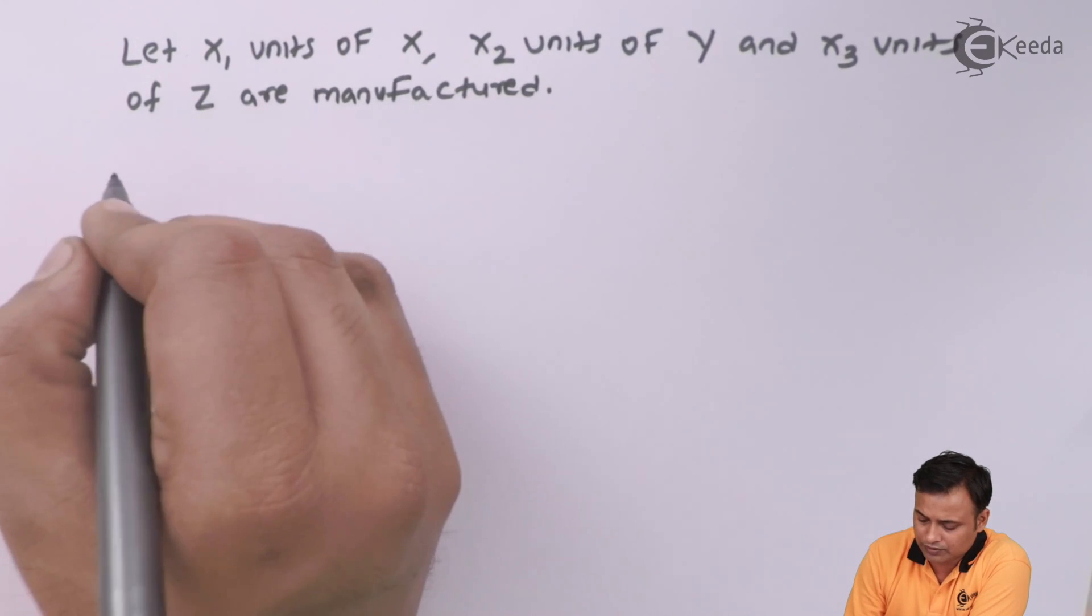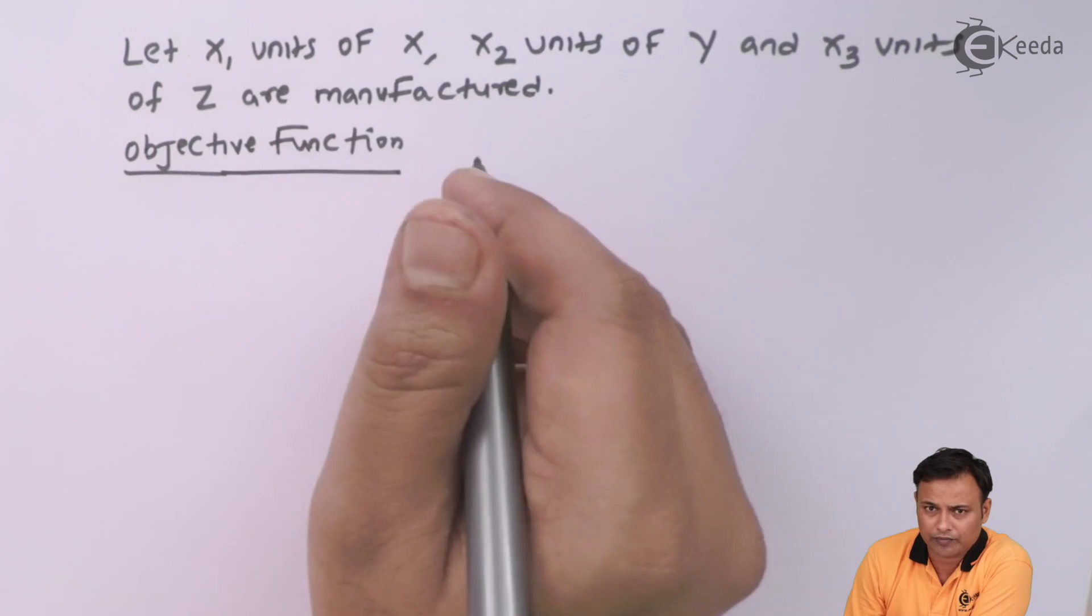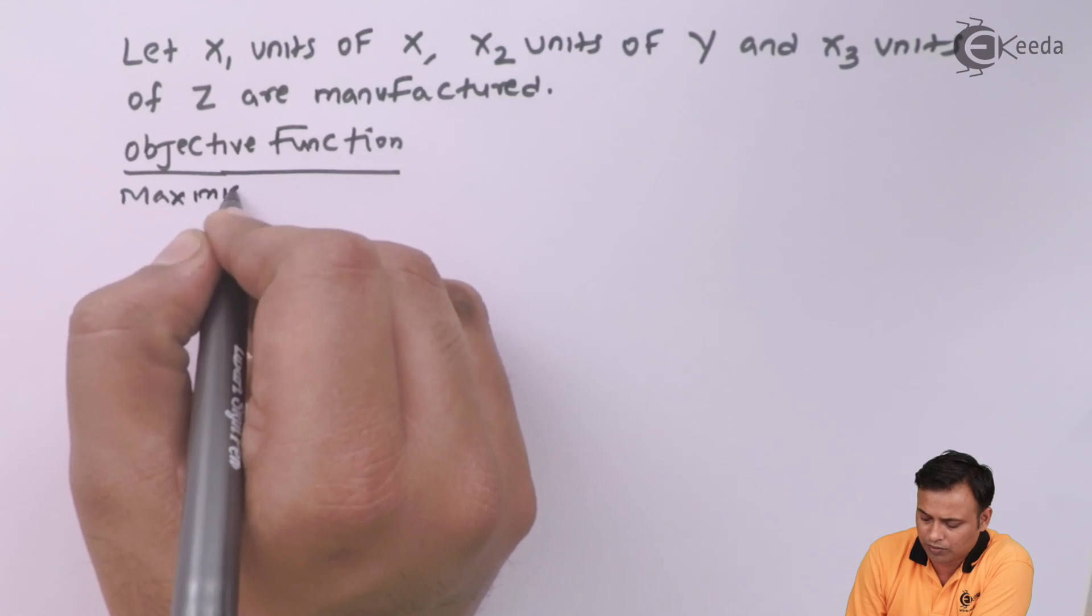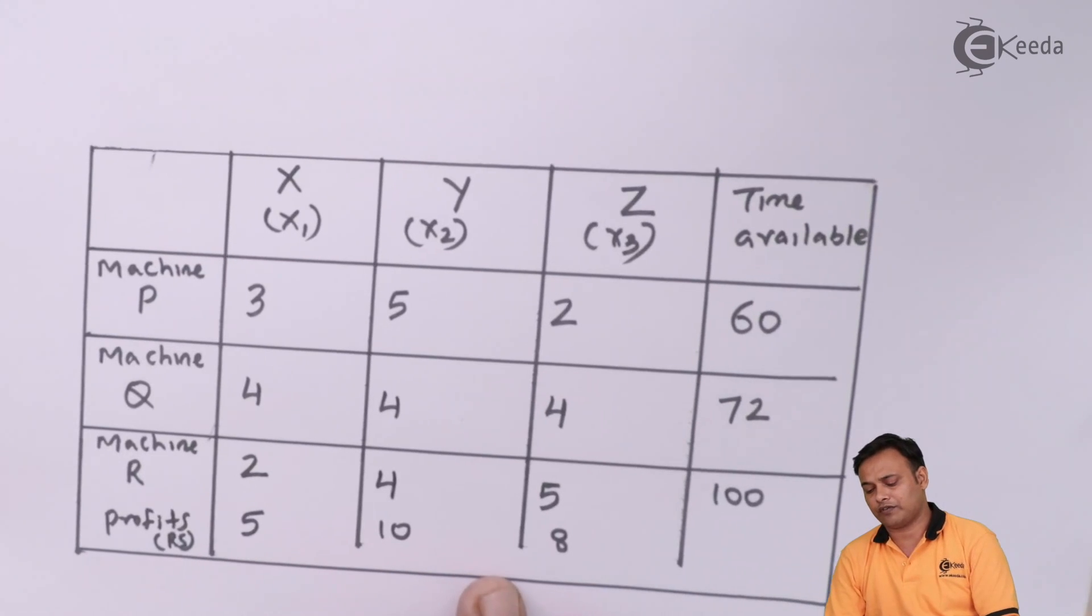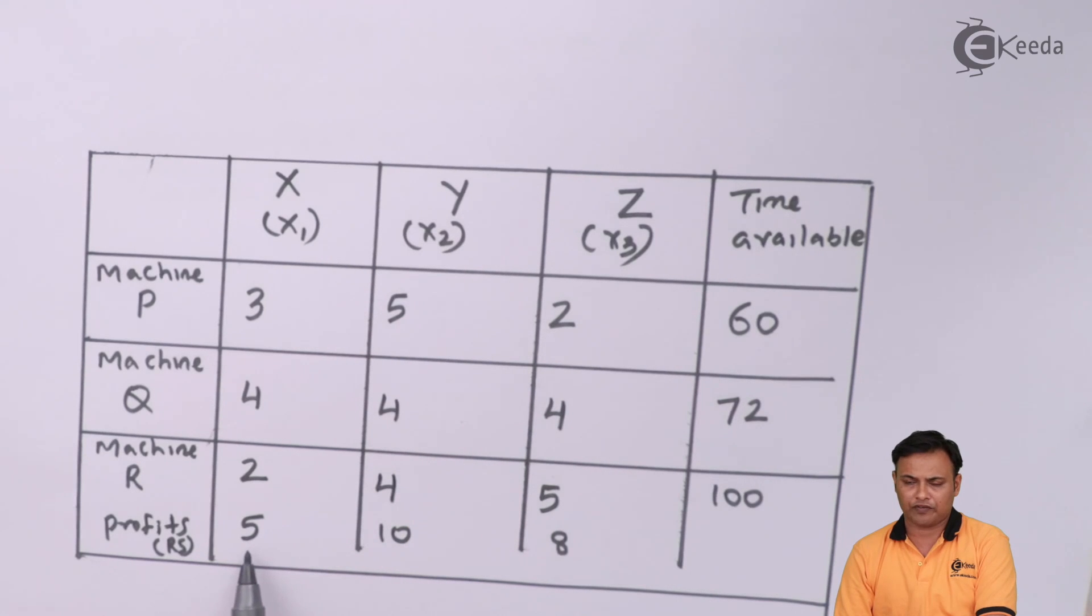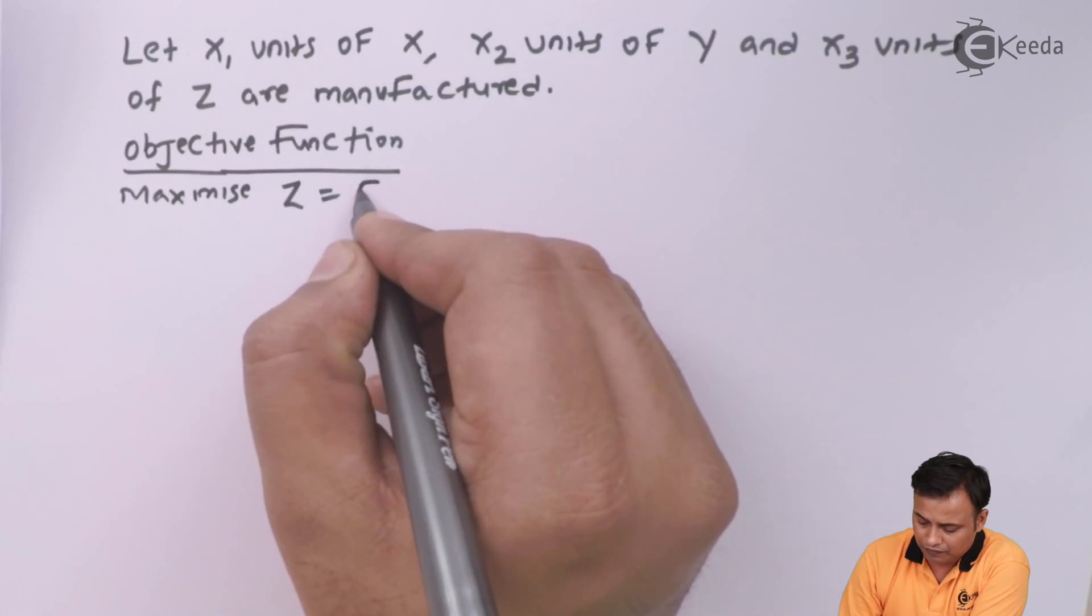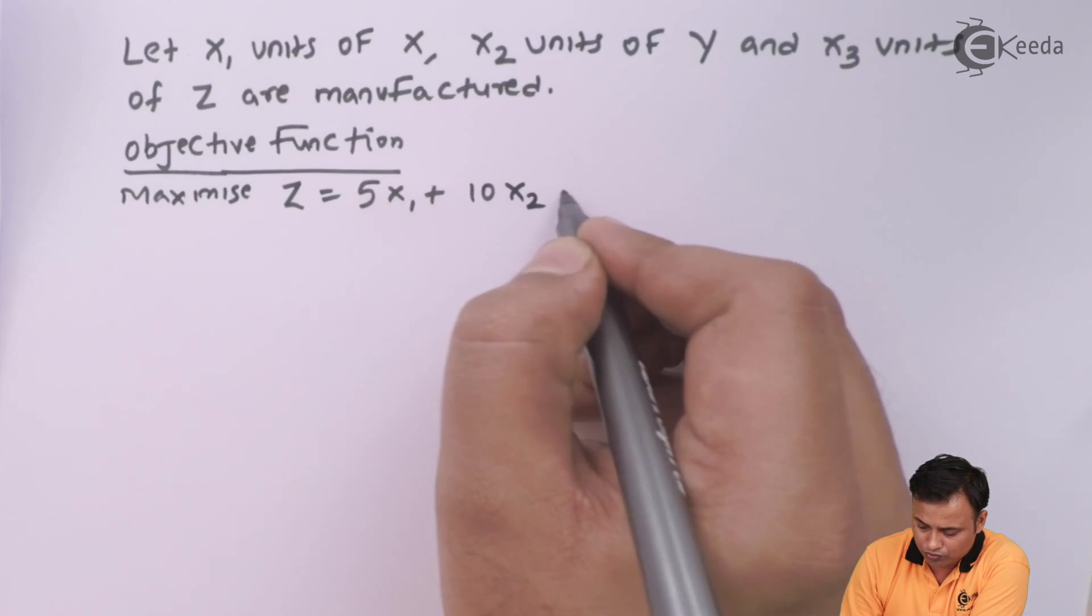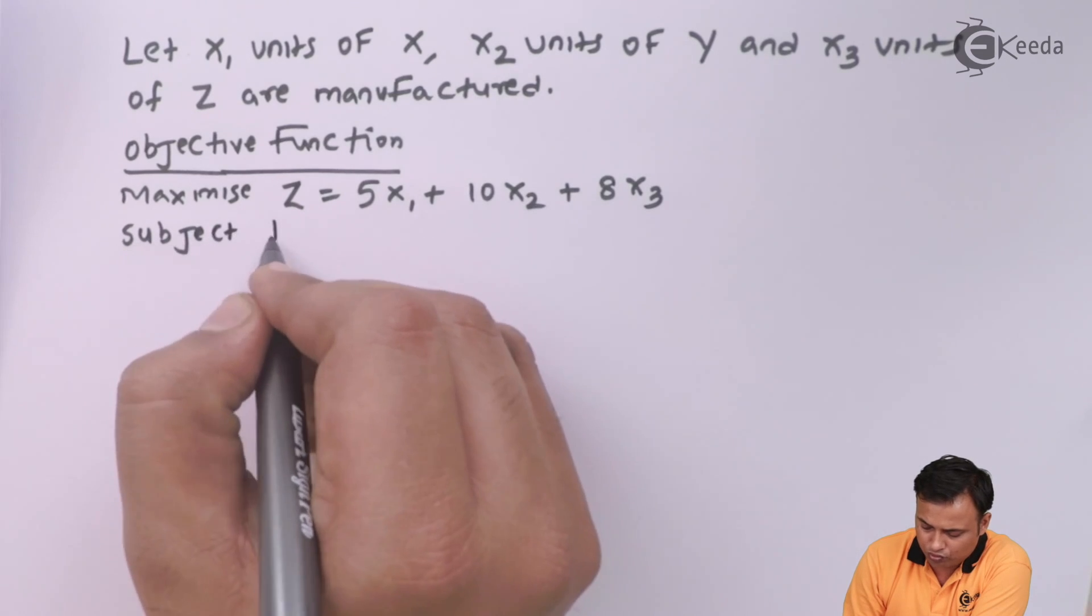And then the next part, my objective function. My objective function will be maximize the contribution or the profit Z equals to how much. My profit per unit for product X is 5, Y is 10, Z is 8. So profit per unit multiplied by number of units. It will be 5X1 plus 10X2 plus 8X3. This is my profit. 5X1 plus 10X2 plus 8X3 subject to what are my constraints.